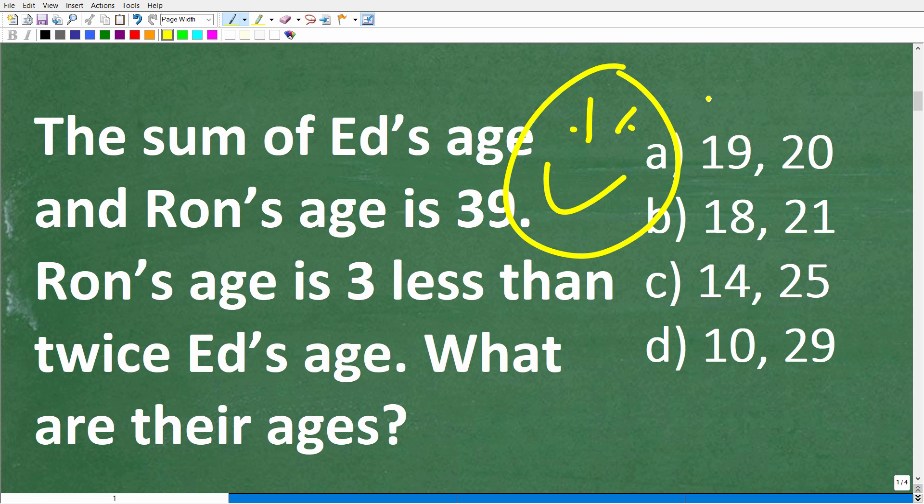So for those of you that still have to take math exams, never, ever, ever leave a math question blank. So just be like, I don't know, 19 and 20 looks pretty good. Now you're probably fixated on the sum of Ed's age and Ron's age is 39. So let's see, 20 plus 19. Well, that adds up to 39. It looks pretty good to me. So that must be the right answer. Well, it's a good guess, but it is wrong.